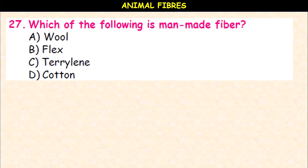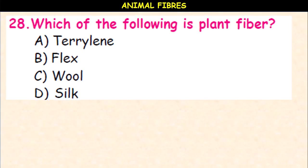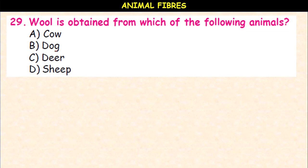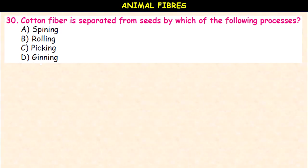Which of the following is a man-made fiber — wool, flax, terrylene, or cotton? It is terrylene. Which of the following is a plant fiber — terrylene, flax, wool, or silk? It is flax. Wool is obtained from which of the following animals — cow, dog, deer, or sheep? It is sheep.